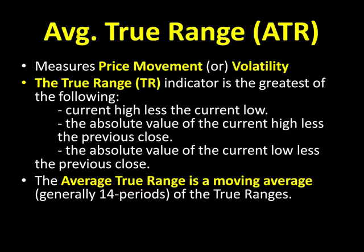Before we talk about the Average True Range, it's important we know what the actual True Range indicator is. The True Range, symbol TR, is looking for the greatest of one of three values: the current high less the current low, the absolute value of the current high less the previous close, or the absolute value of the current low less the previous close. That's a lot of stuff — very complicated, very technical. That's why we don't care about it. What we care about is the true range value, and then I'm going to take the average of that.